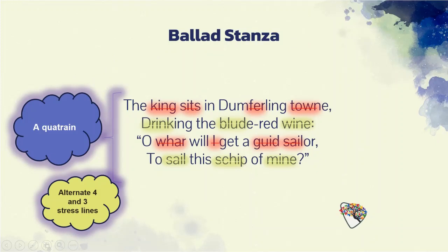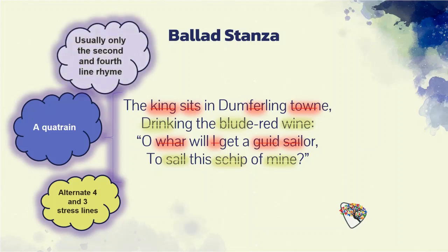These four lines are taken from the famous ballad of Sir Patrick Spence, which is set in Scotland. It is about a Scottish king who sends Sir Patrick Spence on a sea journey, and they never come back because they fall prey to storms. It is narrative, but not entirely dialogic — there are some questions and answers, but the overall structure is not question-and-answer. Usually only the second and fourth lines rhyme: 'wine' and 'mine' rhyme, while 'town' and 'sailor' do not. This is the general pattern of a ballad stanza.